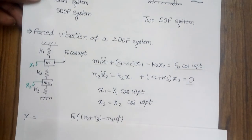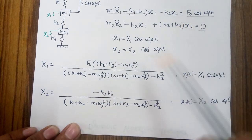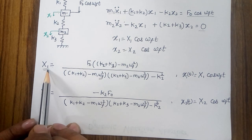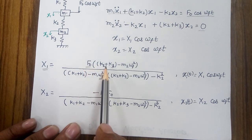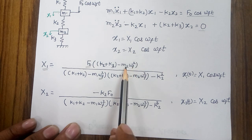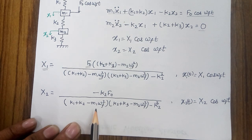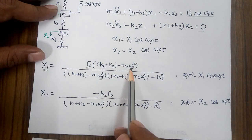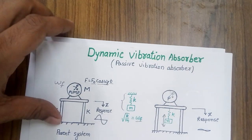When I substitute the general solution into the governing equations, I get the response of the system. I am directly writing the response formulas. The first equation gives the response of the first mass, where F0 appears in the numerator along with terms (K2 + K3), ωF², and M2. The second equation gives the response of the second mass. The response is a function of the excitation frequency as well as the other system parameters.